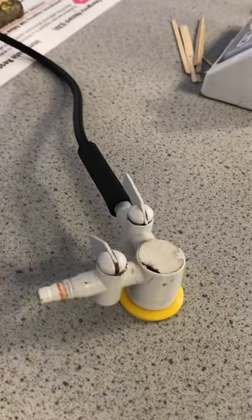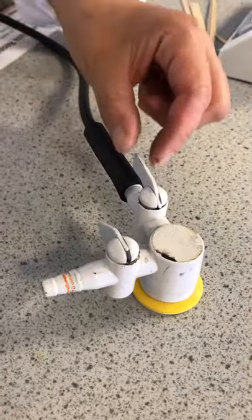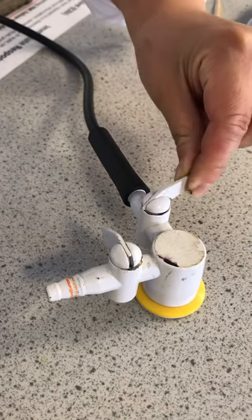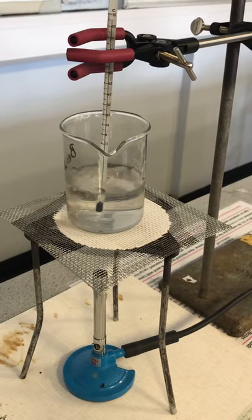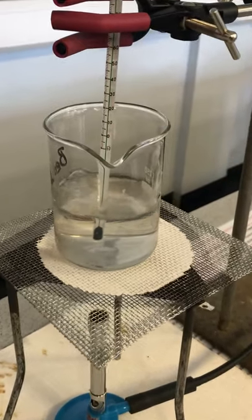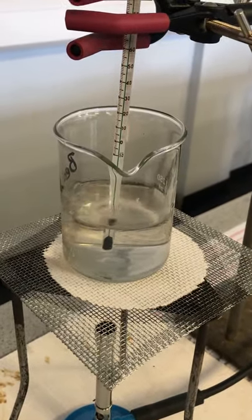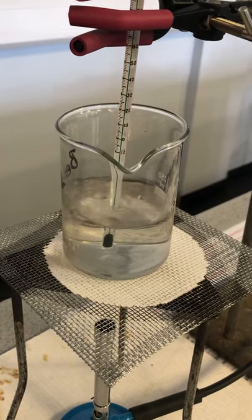Once you have taken your end temperature, simply turn off the Bunsen burner by rotating the gas tap. Leave your beaker as it is to cool down before you touch it, as it is very hot.